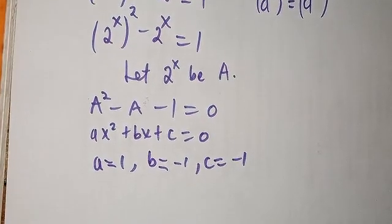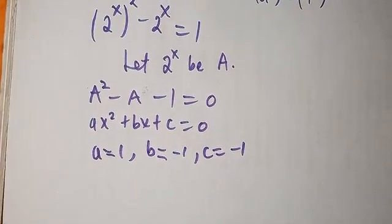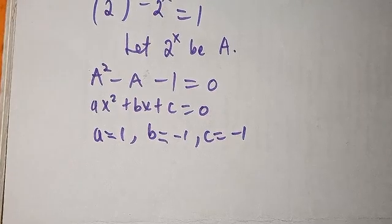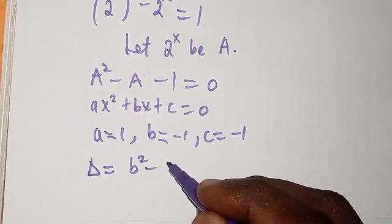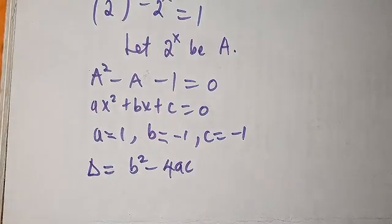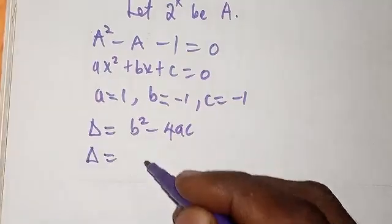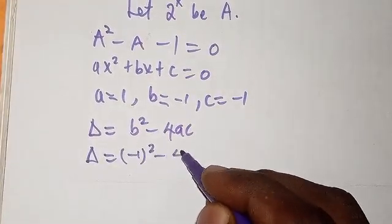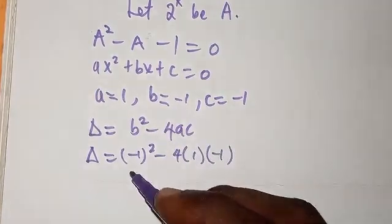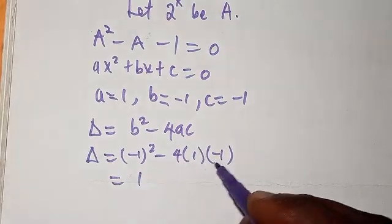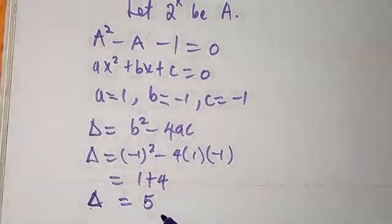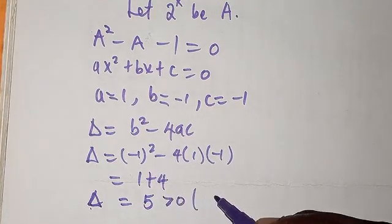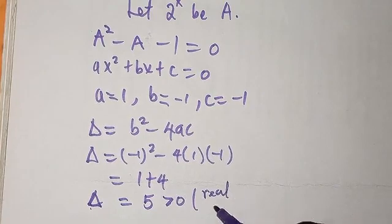Now let's look at the discriminant — b squared minus 4ac — to check whether we will have real roots. The discriminant equals minus 1 squared minus 4 times 1 times minus 1, which gives us 1 plus 4, equals 5. Since the discriminant is 5, which is greater than 0, this tells us that we have real roots.